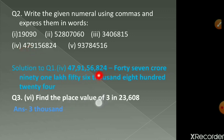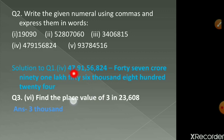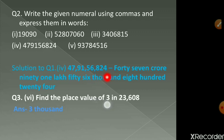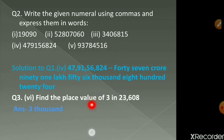So here we have got the number. Now see the periods — this is ones, thousands, lakhs, and crores. So we can write it as 47 crore, 91 lakh, 56 thousand, eight hundred and twenty-four. The rest of the questions you can do as your homework.